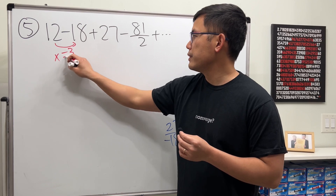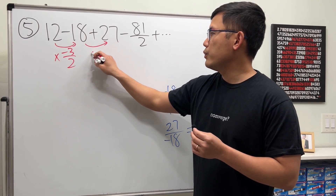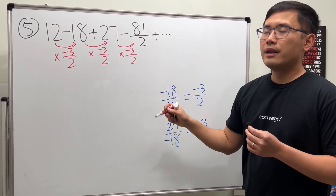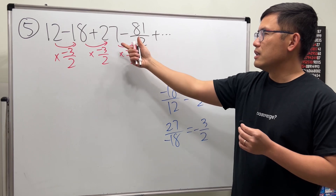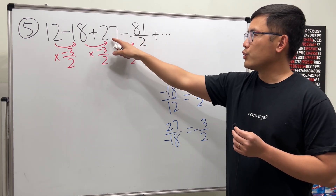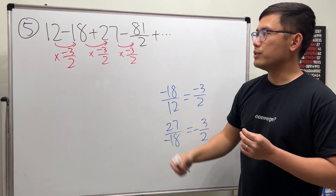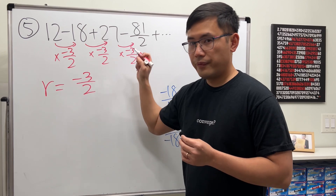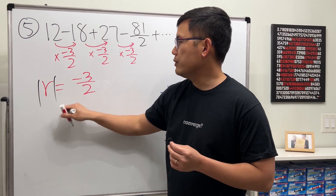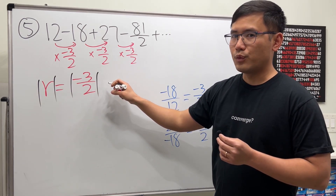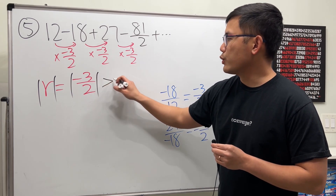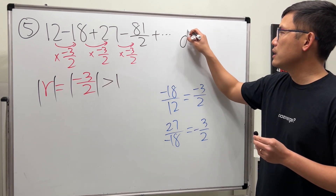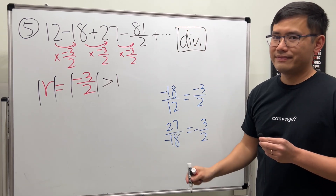To go from 12 to negative 18, we multiply by negative 3 over 2; from there to 27, multiply by negative 3 over 2; and so on. We can verify: 27 times negative 3 is negative 81, and over 2. Since the absolute value of negative 3 over 2 is 3 over 2, which is greater than one, this infinite geometric series diverges.